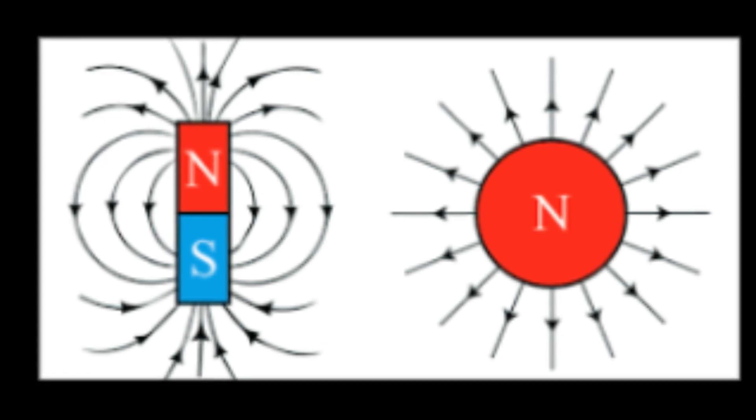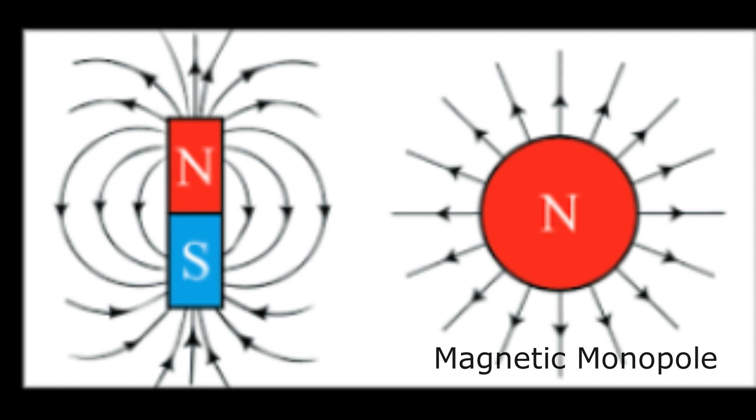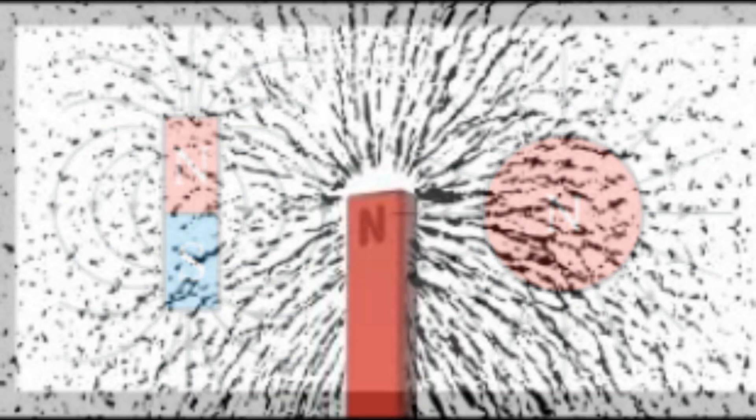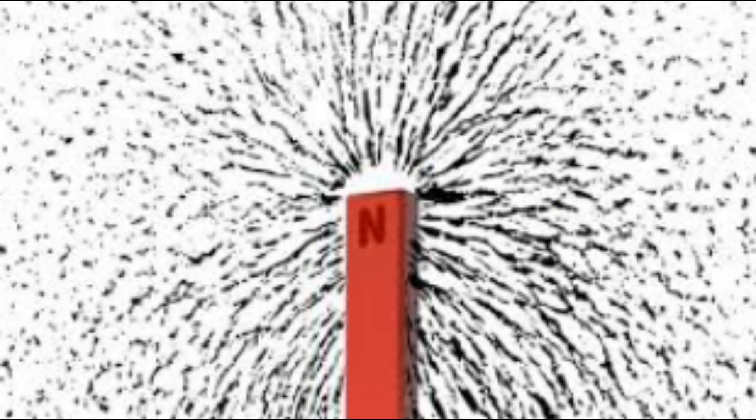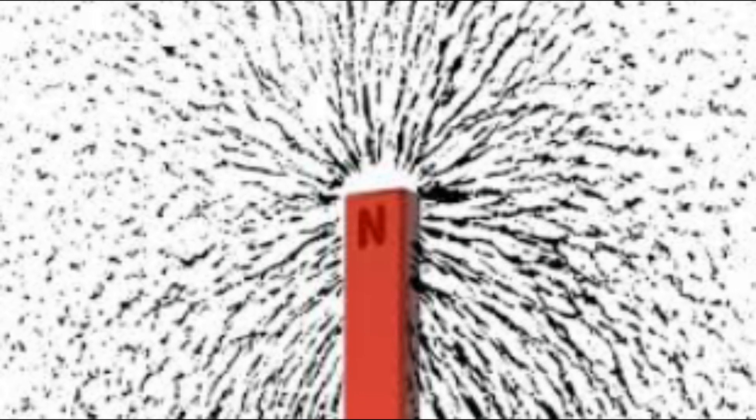The hypothetical elementary particle known as a magnetic monopole in particle physics is an isolated magnet with a single magnetic pole. A net magnetic charge to the north or south would characterize a magnetic monopole.